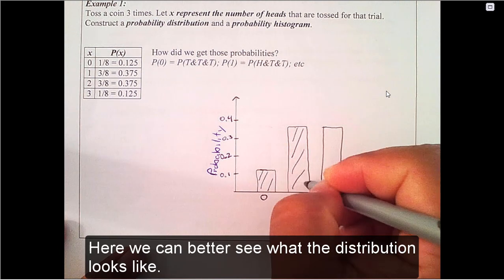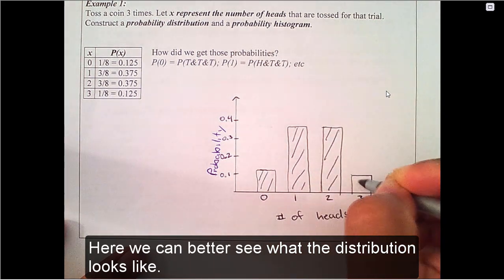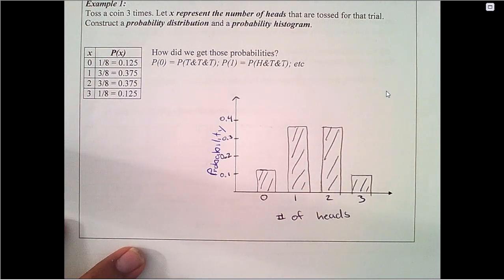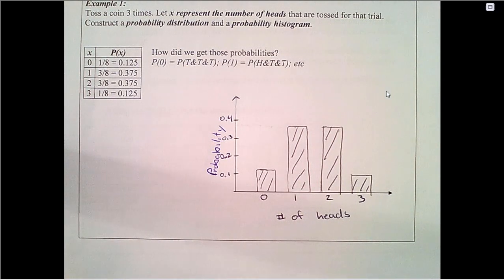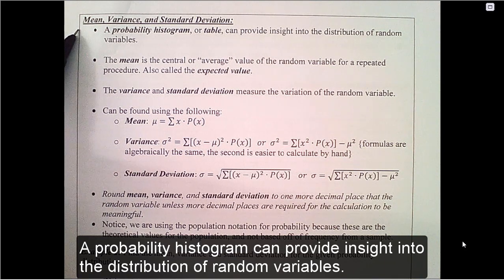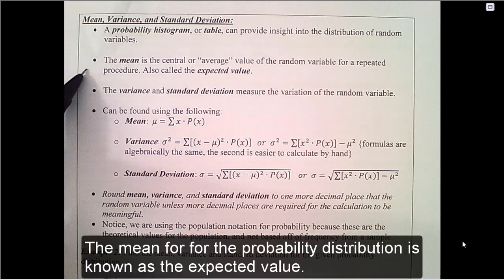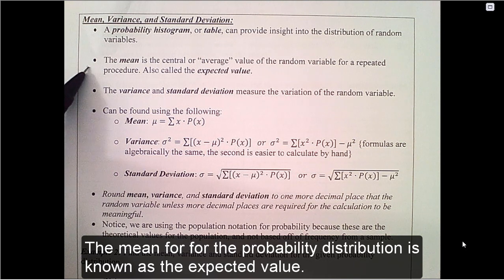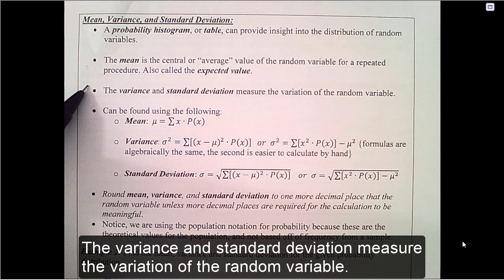Here we can better see what the distribution looks like. A probability histogram can provide insight into the distribution of random variables. The mean for the probability distribution is known as the expected value.